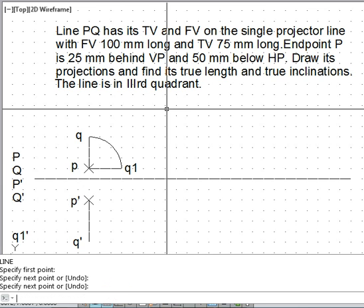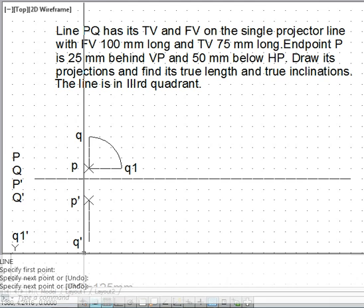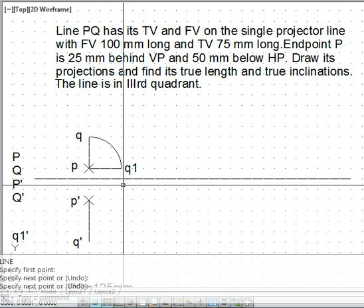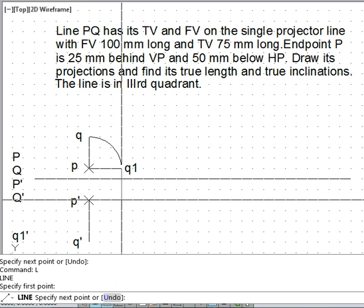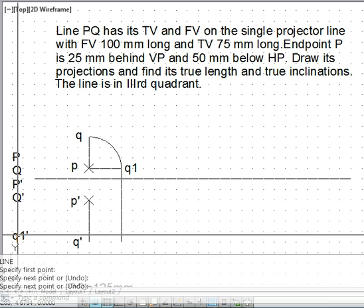Now when the top view is horizontal, the vertical from the other end of the top view, that will give us the vertical locus of capital Q dash.